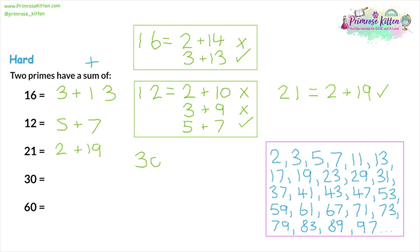For 30, I'll skip the obvious ones. 30 would be 2 and 28, both even, so not prime. Moving to 3: 30 is 3 plus 27, but 27 is in the three times table — it's 3 times 9 — so it has quite a few factors. Then 5: 30 would be 5 plus 25, but 25 is a square number divisible by 5, so not prime. Moving to 7: 30 is 7 plus 23, and 23 is in our list of prime numbers. So 30 is the sum of 7 and 23.